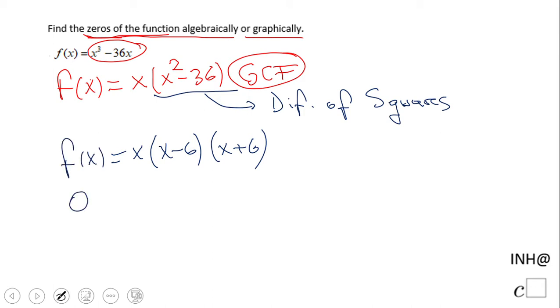set the polynomial equal to zero because we need to find those zeros. We use that famous property called zero product